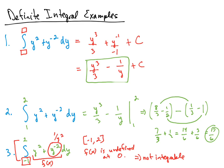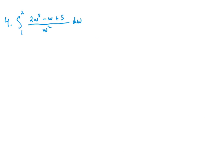When we were talking about the fundamental theorem of calculus, we said that f of x had to be a continuous function over the given interval. It's easy to forget to actually check this, but it is possible that we'd be given a situation like this, so we need to pay attention to that. For our next one, we have the integral from 1 to 2 of 2w to the 5th minus w plus 5 divided by w squared. This function will not be continuous whenever the denominator equals 0, but our interval is only between 1 and 2, and nothing in that interval will make the denominator 0. So this function is continuous — we're good to go.